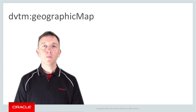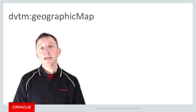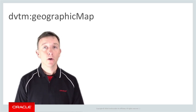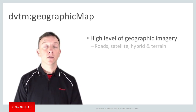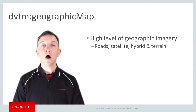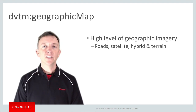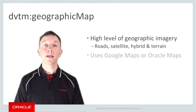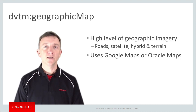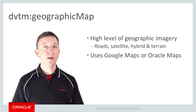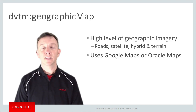Simply put, the geographic map component is for a mobile application where you want to display a map. Specifically, the geographic map component is for mobile applications where you want a high level of detail in your maps, including roads, satellite imagery, a hybrid combination of both, terrain maps, and so on. The geographic map component is designed to support integrating either Google Maps or Oracle's mapping solutions. As the map component needs to make a call to these external services, this requires that the mobile application has a live connection to work with these.